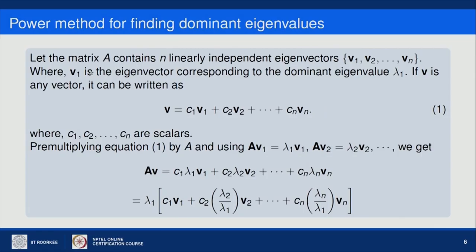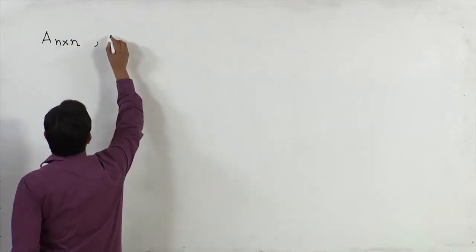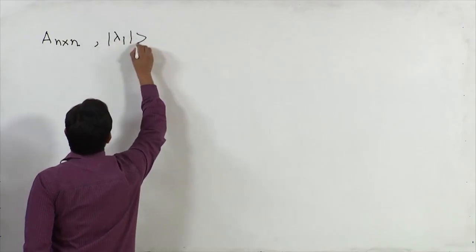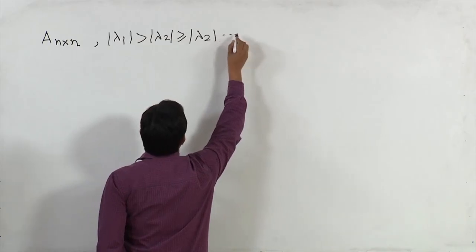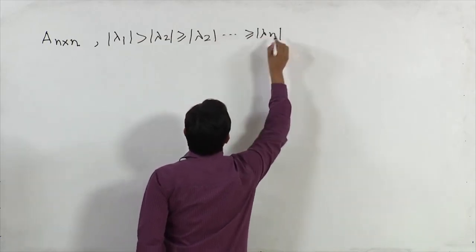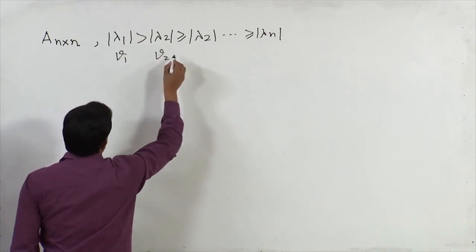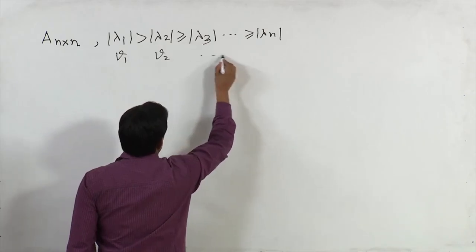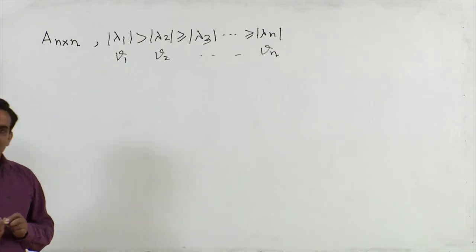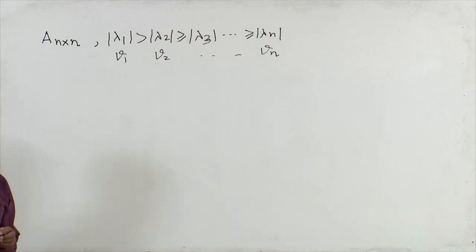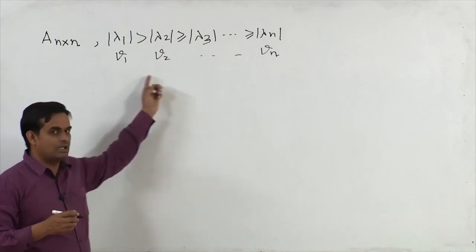With these two conditions, let us derive the power method. Let A be an n by n matrix with dominant eigenvalue lambda 1, and eigenvectors v1, v2, ..., vn corresponding to lambda 1, lambda 2, ..., lambda n respectively, all assumed linearly independent. Since these vectors are linearly independent, any vector v from R^n can be written as a linear combination of these eigenvectors.